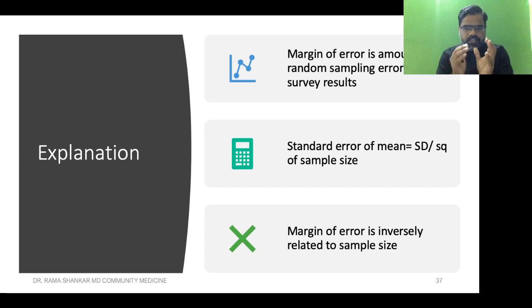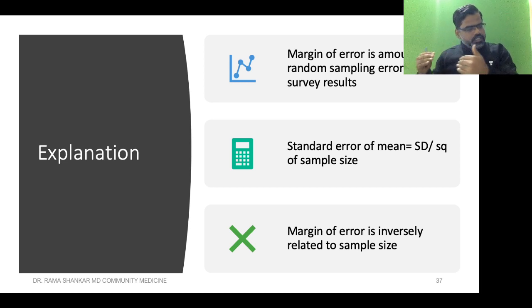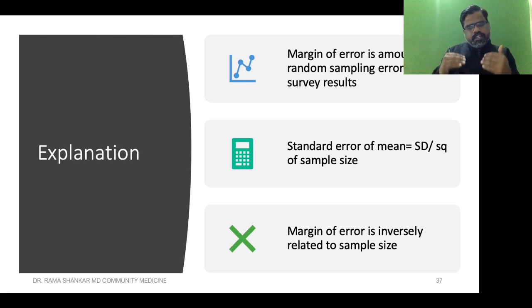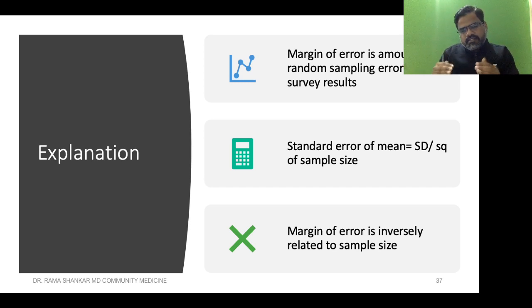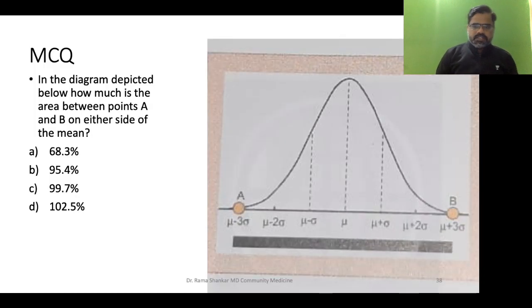Think logically: if you take 10 students as a sample and give a result versus taking 100 students, with 100 students the error will be less. When you judge by only 10 students the error will be more. As you increase the number, your errors will decrease.